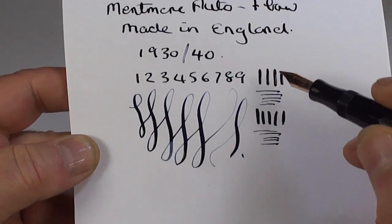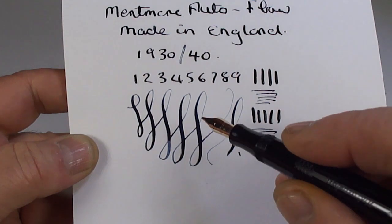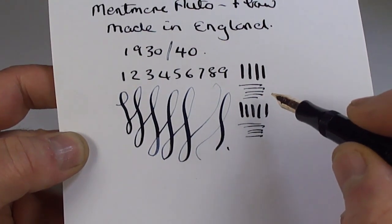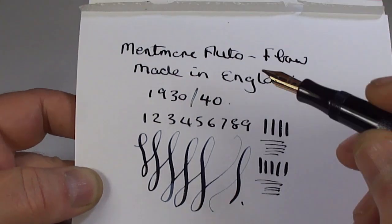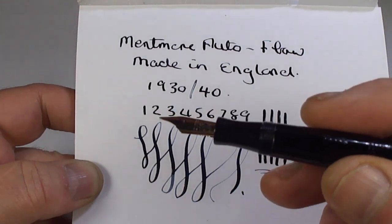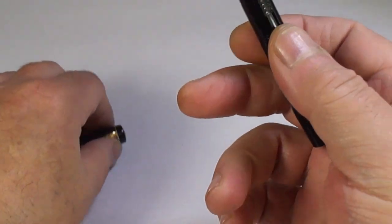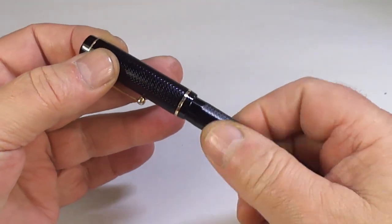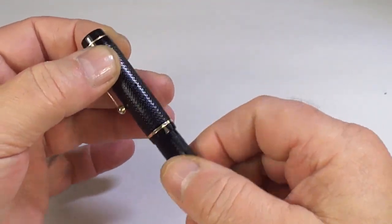You can see on the downward stroke, we're getting quite a broad, broad line. On the cross stroke, it's quite a fine line. So, yeah, a lovely flexy nib. So, what we'll do, we'll clean that after the video. Let's pop the cap back on. And there we have it.